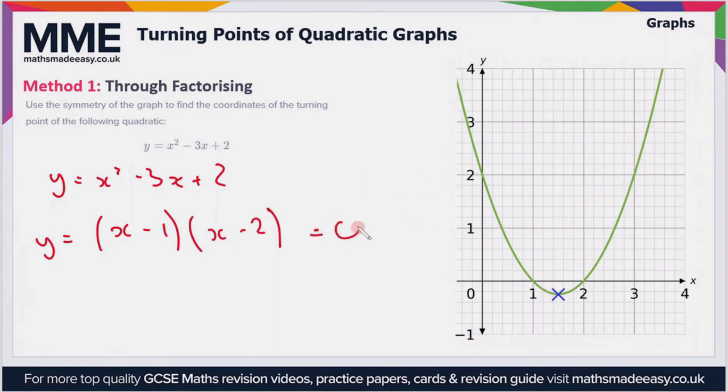So the roots are where the graph crosses the x-axis. If we set this expression equal to 0, so that's the y value of 0, that means we're going along the x-axis here, so we can find out where the graph crosses. In order to equal 0, that means that either x minus 1 or x minus 2 equals 0.